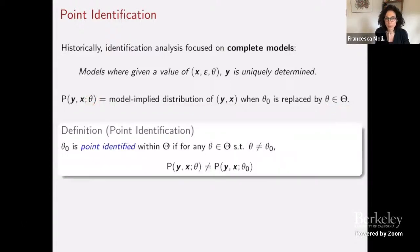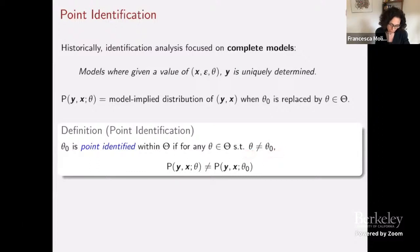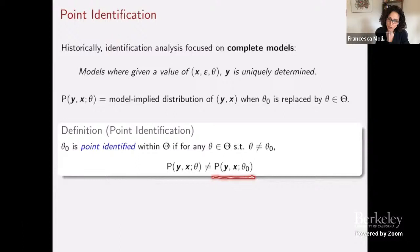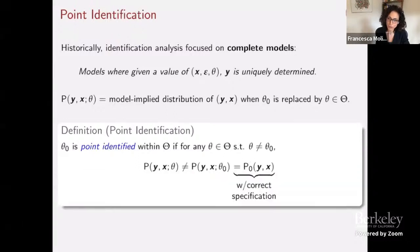We say the model is point identified — that the parameters theta can be recovered from the observation of the joint distribution of y and x — if, whenever I take a value of theta different from the true data generating value theta zero, the distribution of y and x implied by the model at that candidate theta is different from the one implied at theta zero. And if the model is correctly specified, the distribution implied under theta zero equals the distribution of y and x seen in the data.